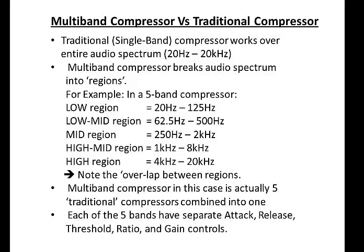A traditional compressor, as the one we've studied so far, is a single band compressor and it works over the entire audio spectrum of 20 Hz to 20 kHz, whereas a multiband compressor breaks the audio spectrum into regions.